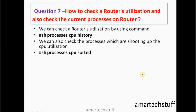Question number seven: how to check a router's utilization and the current processes on the router? The command to check CPU utilization is 'show processes cpu history', which shows utilization for the last five minutes, last 60 seconds, and up to the last 72 hours. To see the processes currently running and shooting up CPU utilization, the command is 'show processes cpu sorted', which lists all running processes and their current CPU and memory usage.